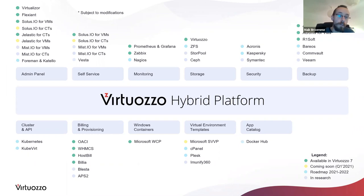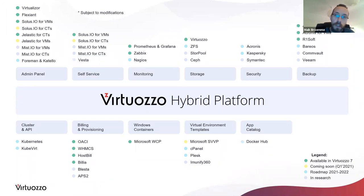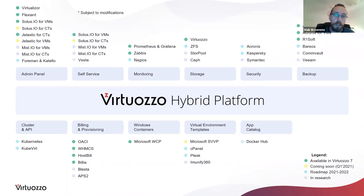Looking at the poll results, it's already well aligned with our ecosystem and platform approach. The majority of users want additional admin panel and self-service capabilities, and we already have most third-party integrations in this area. For billing we already have four working solutions available with Virtuoso Hybrid Server 7.5. For monitoring, we introduced Prometheus and Zabbix in last week's release and are going to extend it with more monitoring tools in future updates.